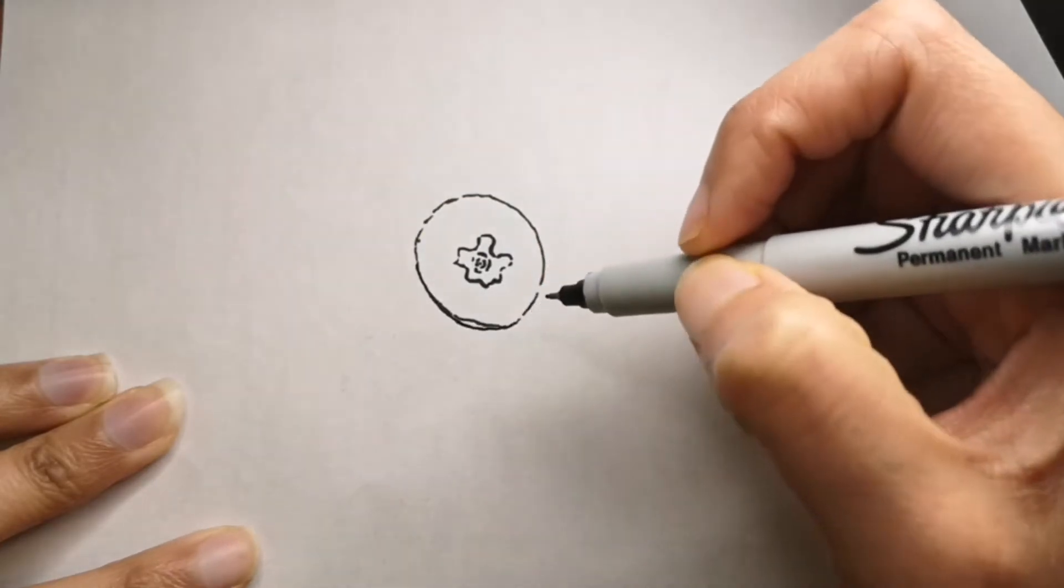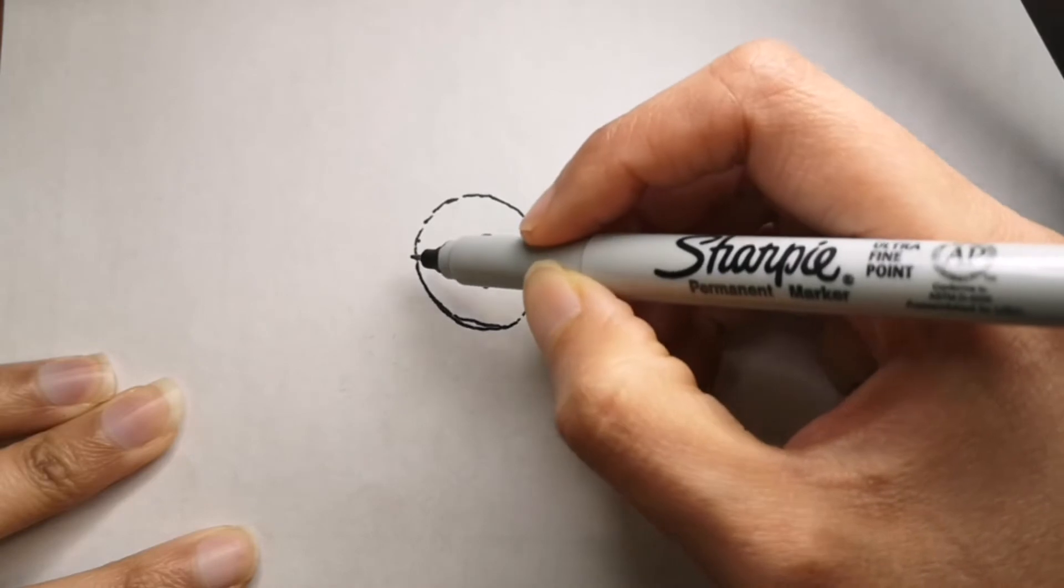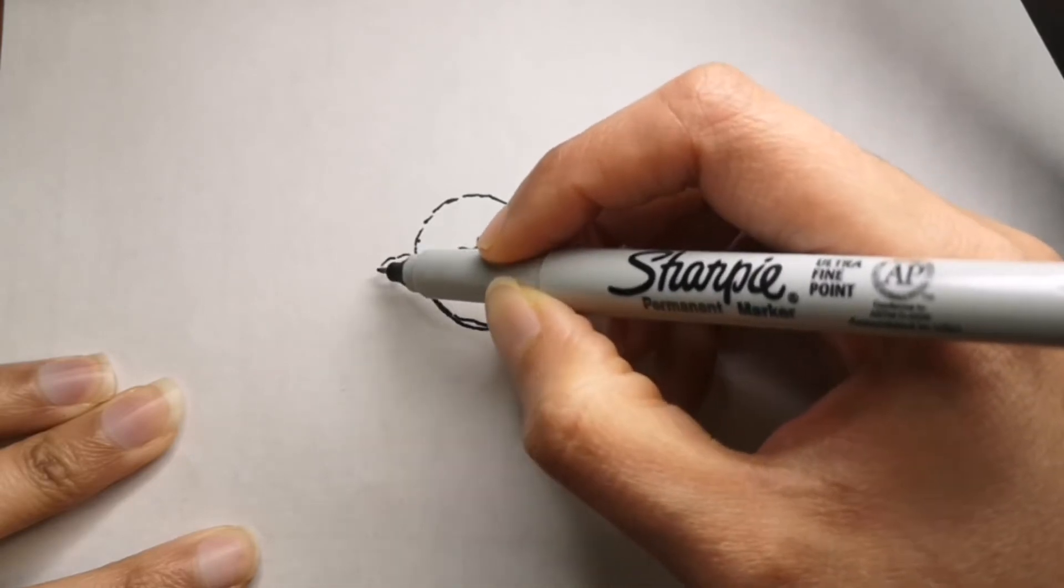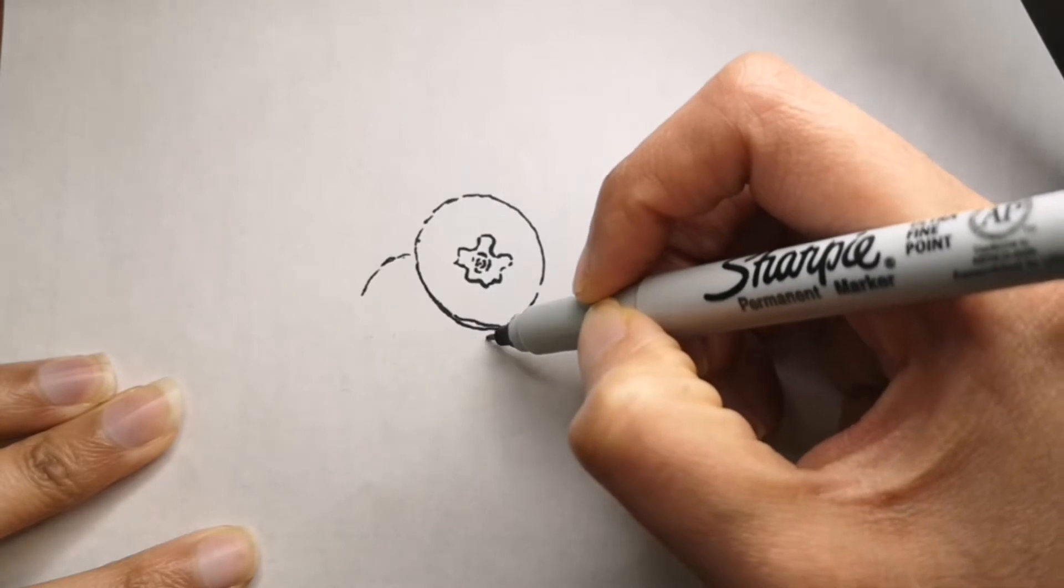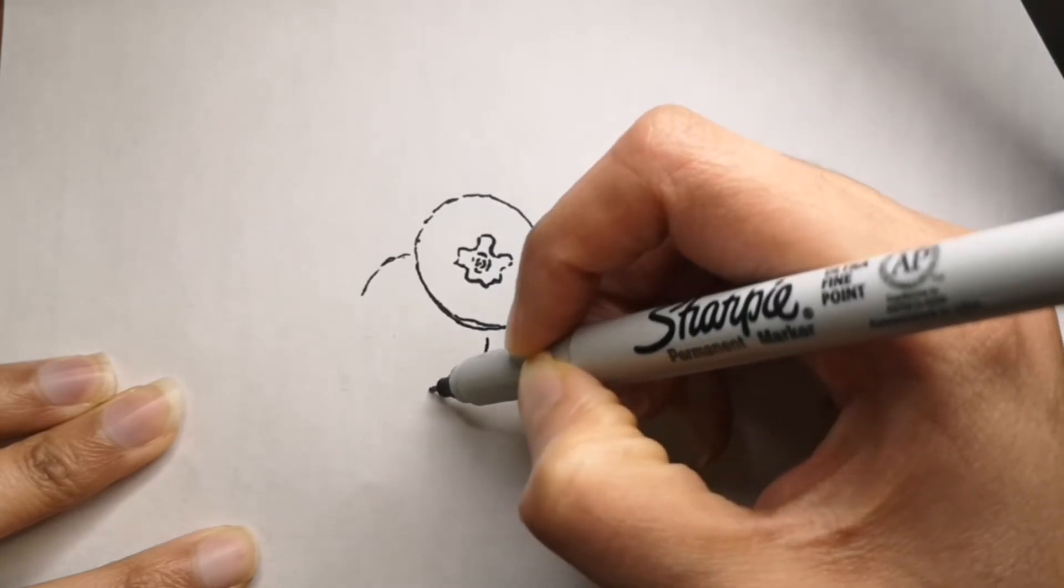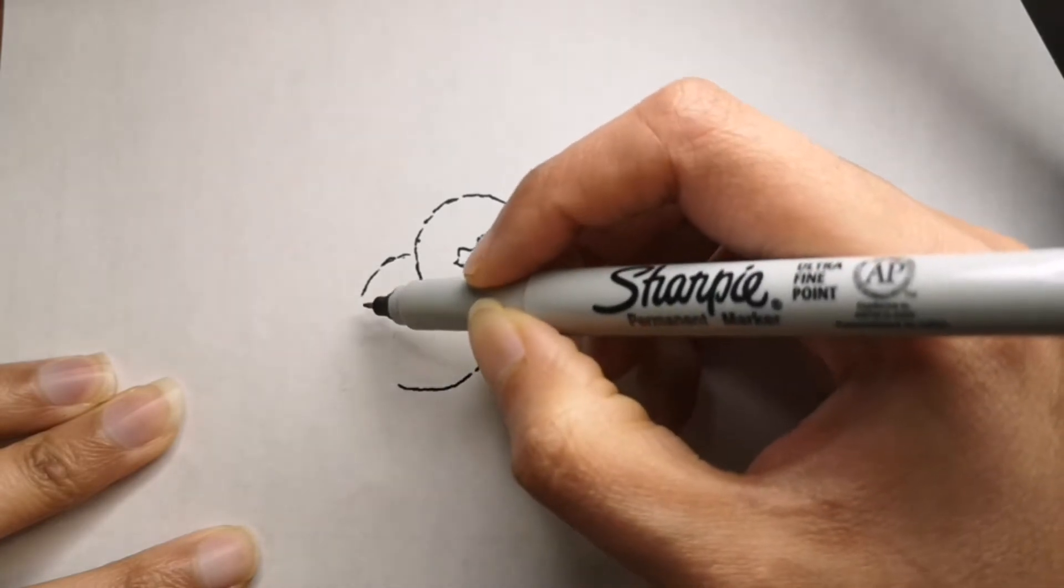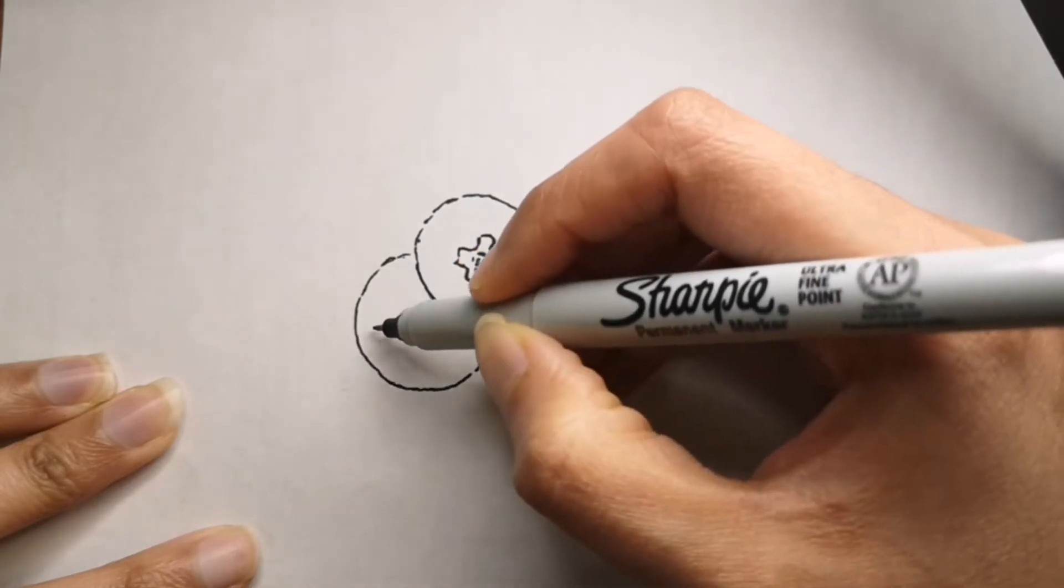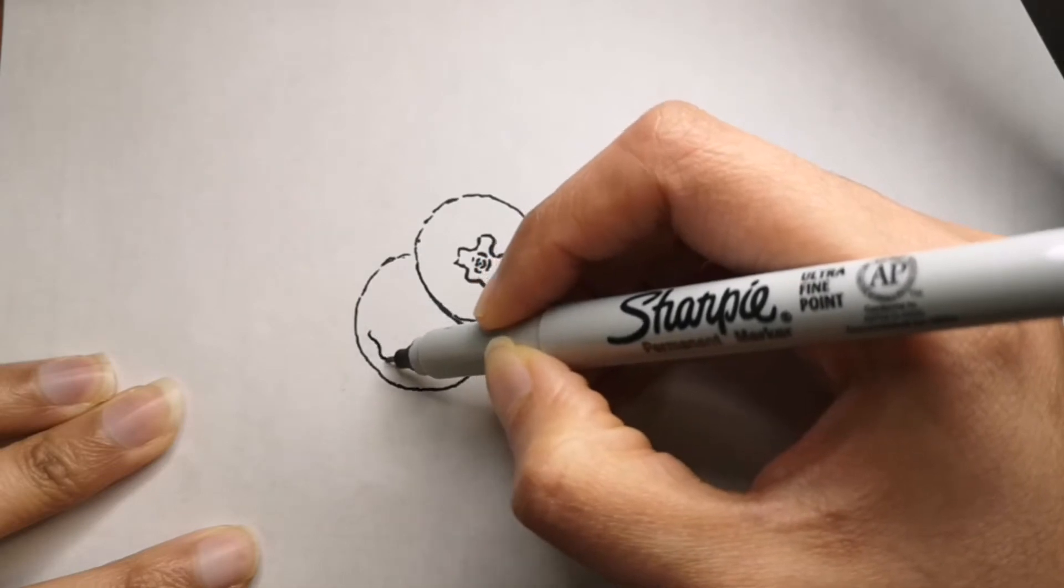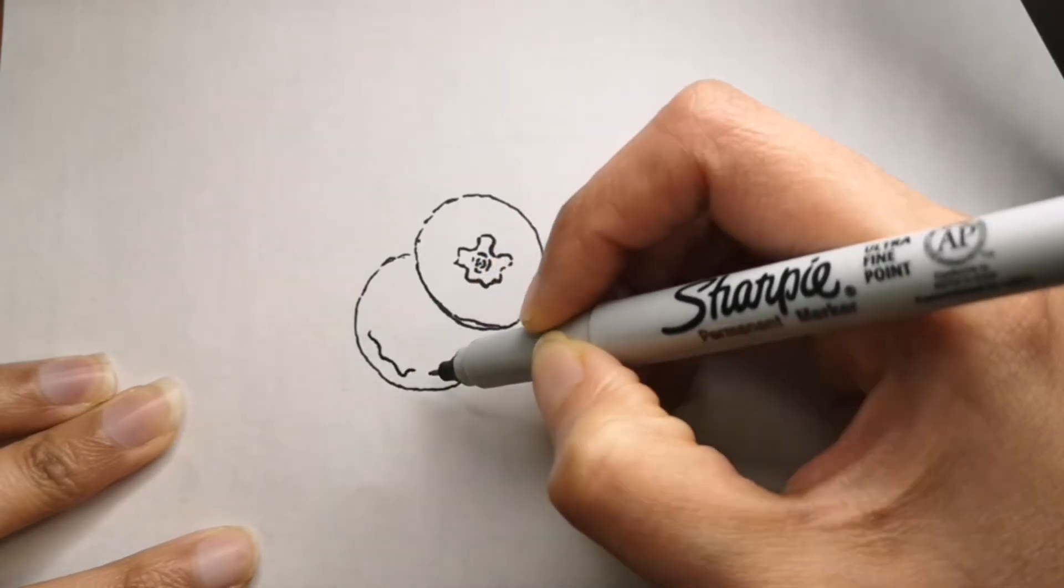You can see that we are just drawing the outlines of the blueberries now. You can either use a sharpie or a pencil and an eraser, it's up to you, whichever is easier for you. I will also give you some fun facts about blueberries.